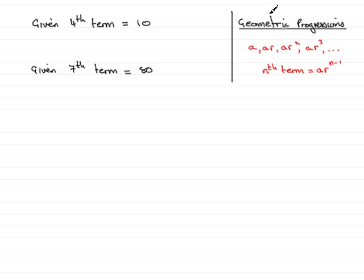Well first of all, just as a reminder with geometric progressions, remember the first term is A and the second term you multiply by a common ratio and get AR, and the third term is AR squared, and the fourth term AR cubed, and so on. In fact, the nth term is always A times R to the power N minus 1.